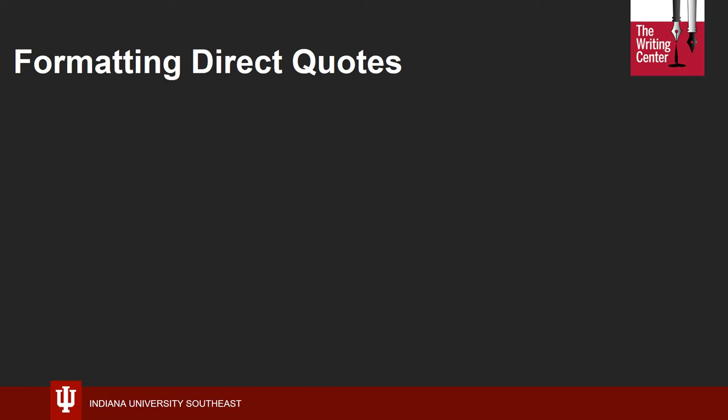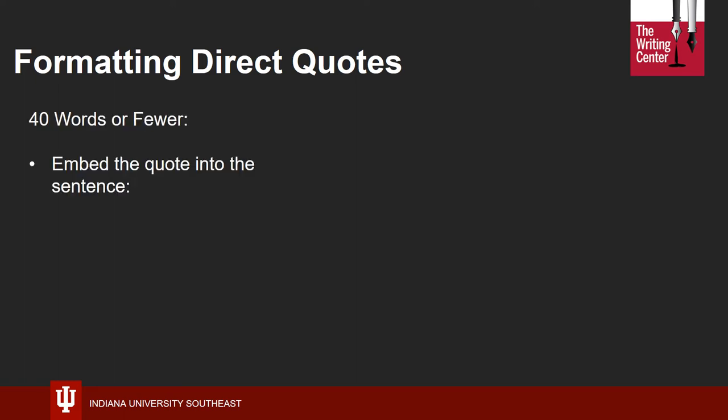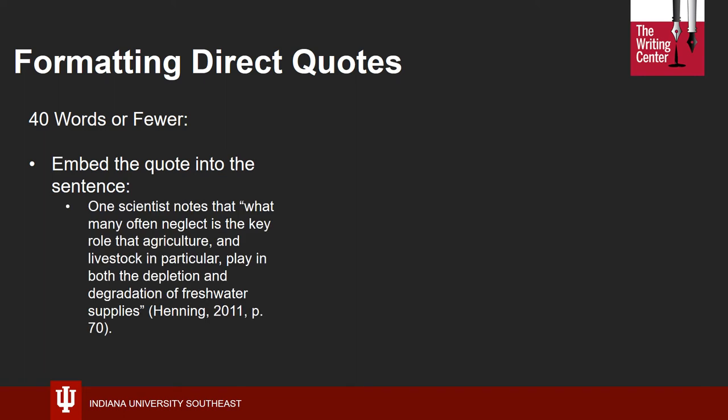Before we enter into a conversation about what in-text citations look like, it's important to touch briefly on how APA requires formatting direct quotes taken from sources. If the direct quote is 40 words or fewer, you will simply embed that into a sentence. Note that a direct quote cannot stand alone as its own sentence — it must be introduced in some way in your own words. In a direct quote, you are also required to provide the page number in the in-text citation if there is one available, such as from a book or journal article. It's acceptable to omit this if there are no clearly accessible page numbers.